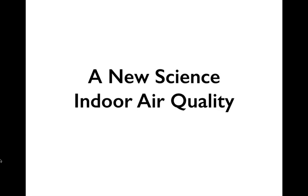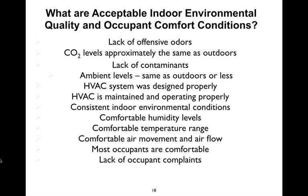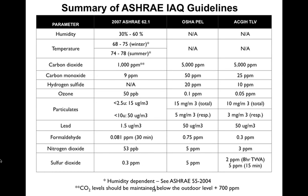A new science started to develop — the science of indoor air quality. Before the 70s, there was very little research on it. So first you have to define what an acceptable indoor environment is. Some of it's obvious: lack of offensive odors, comfortable temperatures, comfortable humidity, comfortable airflow. ASHRAE and a few other organizations have put together basic guidelines with numbers associated with good indoor air quality.